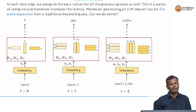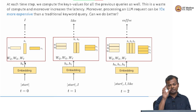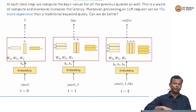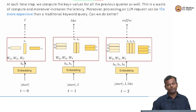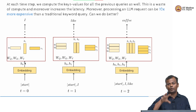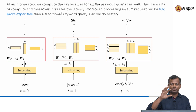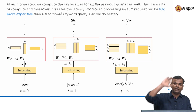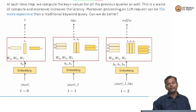Now you come to time step 3. Again you do the same thing - you have start, I, like. So you compute Q1, Q2, Q3, K1, K2, K3, V1, V2, V3. Once these three Q, K, V matrices have been computed, use the attention equation to compute refined representations for these words and then pass through every layer of the network and finally predict 'copy'.